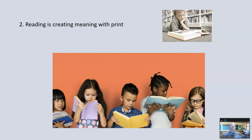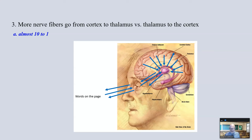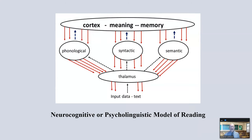Our brain is naturally a meaning-making organism. During the process of reading, more nerve fibers go from the cortex down to the thalamus than from the thalamus up — almost ten times more. In the simple view, information went from words on the page up to the eyes, to the thalamus, and then up to the cortex. But in actuality, more information is flowing down from the cortex to the page than the other way. We use what's in our head to make sense and create meaning with what's on the page.